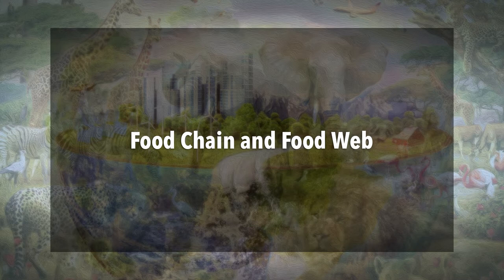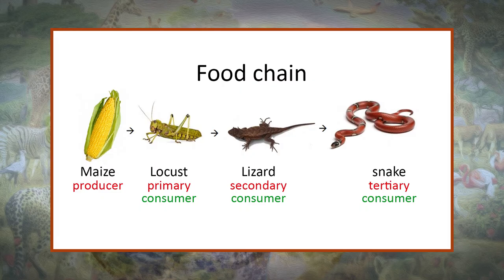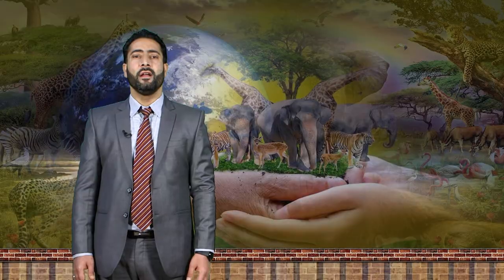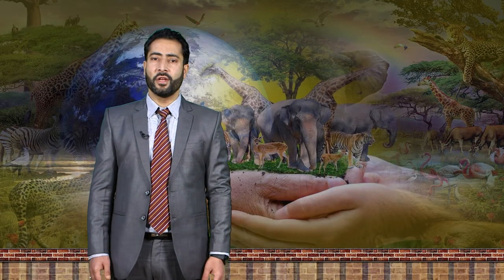Now let's discuss food chain and food web. A food chain is a linear sequence of organisms which starts from producer organisms and ends with decomposer species. A food web is a connection of multiple food chains. A food chain follows a single path whereas a food web follows multiple paths. In scientific terms, a food chain is a chronological pathway that shows the flow of energy from one organism to the other.